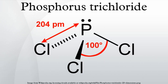If an electric discharge is passed through a mixture of PCl3 vapor and hydrogen gas, a rare chloride of phosphorus is formed: phosphorus tetrachloride. PCl3 as an electrophile: